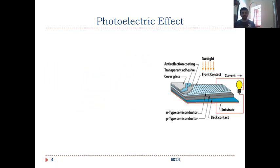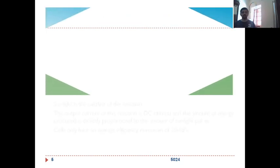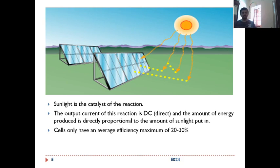We can see a number of photovoltaic cells arranged into a module and an array. Here the reaction is the light energy is converted directly to electricity, there is no intermediate stage. Sunlight is the catalyst of the reaction. The output current of this reaction is direct current. The amount of energy produced is directly proportional to the amount of sunlight put in. Input is sunlight and output is electrical energy.